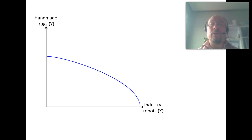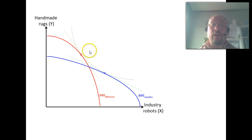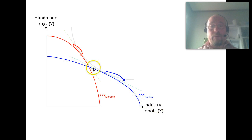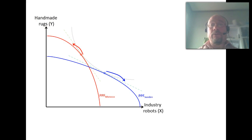So what happens if we introduce trade between these two countries? We start from the autarky situation. Sweden and Morocco will try to produce more of the good that they are relatively good at — the good in which they have a comparative advantage. So Sweden will try to produce more and more industry robots and will therefore have to give away production of handmade rugs. Vice versa for Morocco: they want to produce more handmade rugs and therefore have to reduce the production of industry robots.